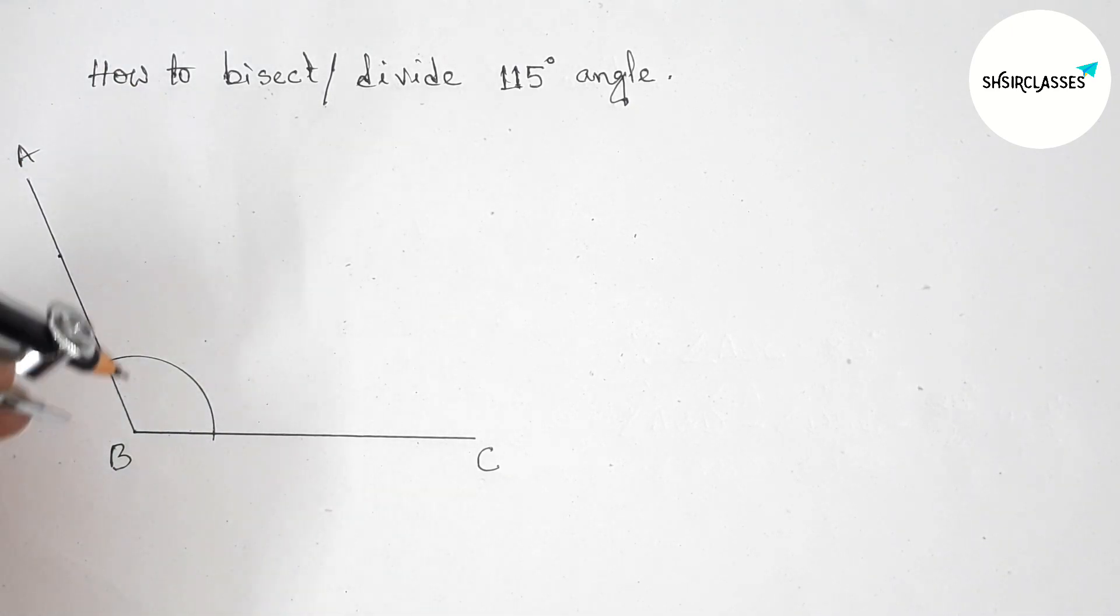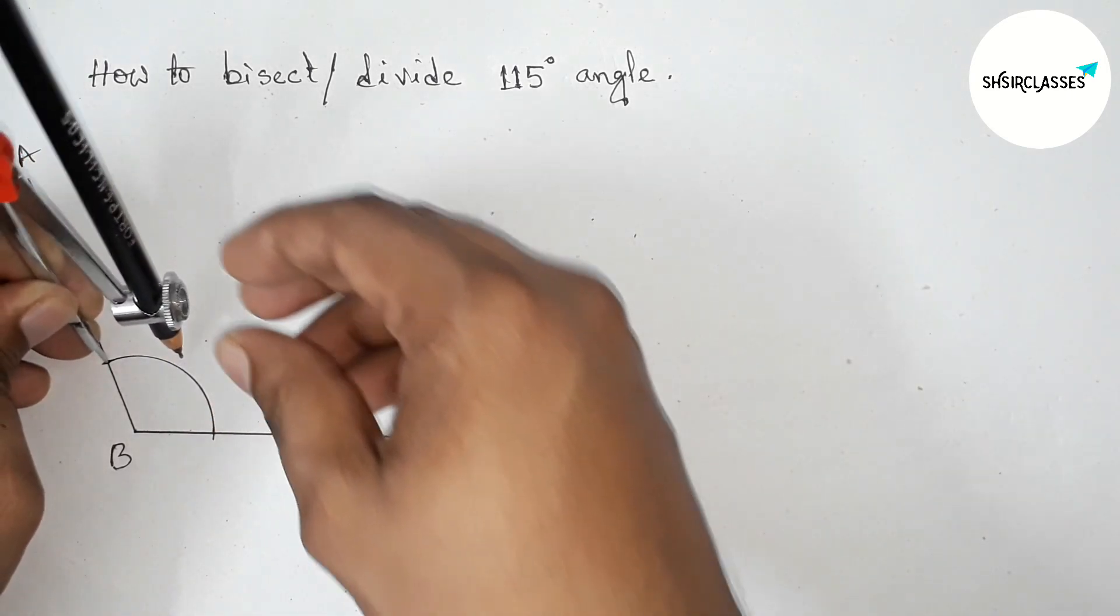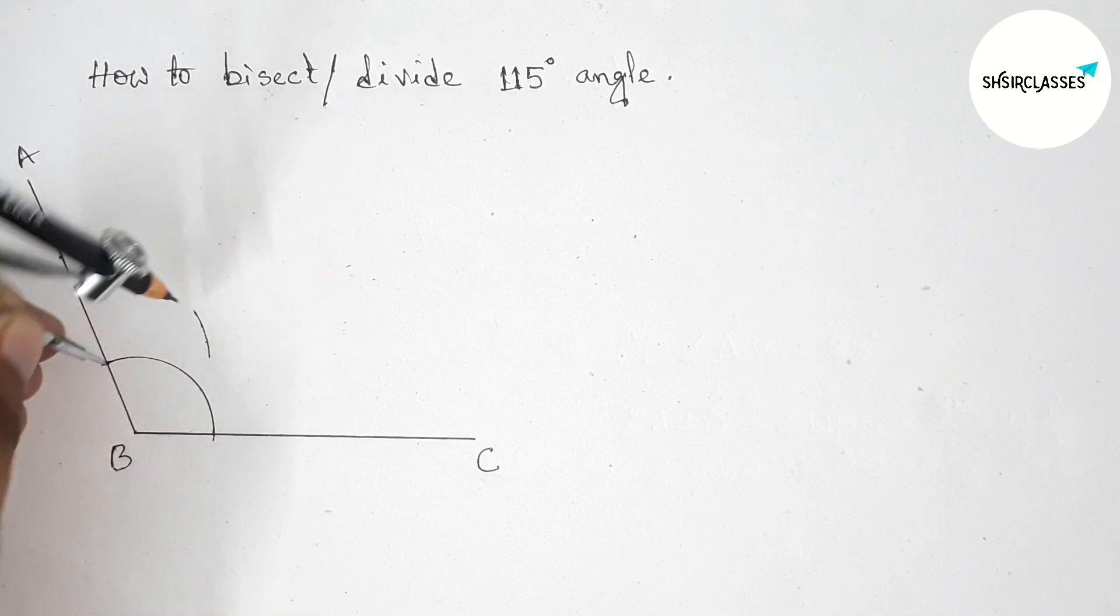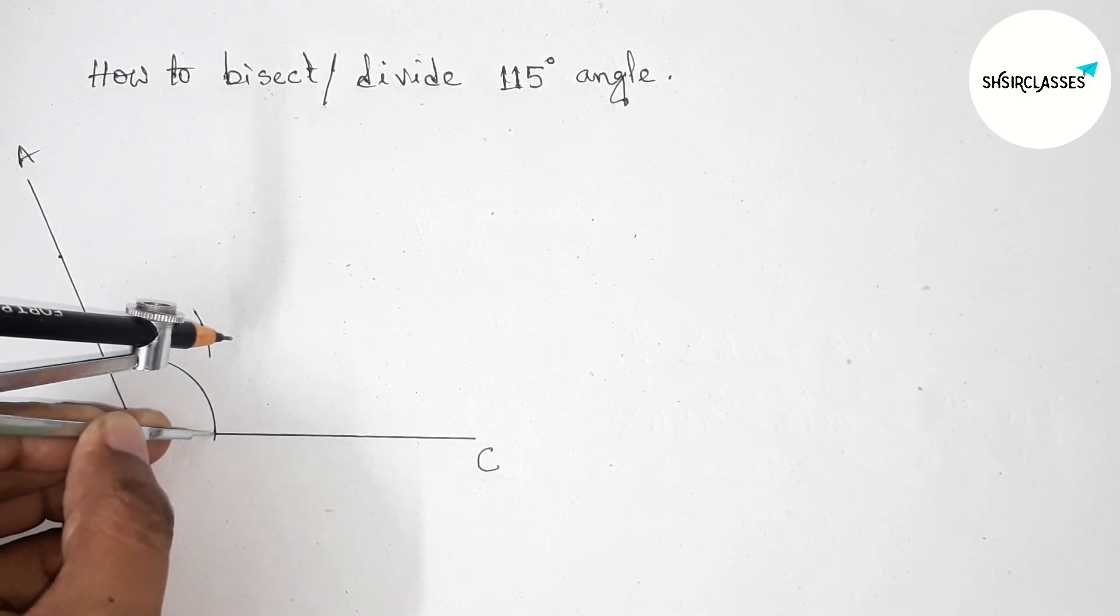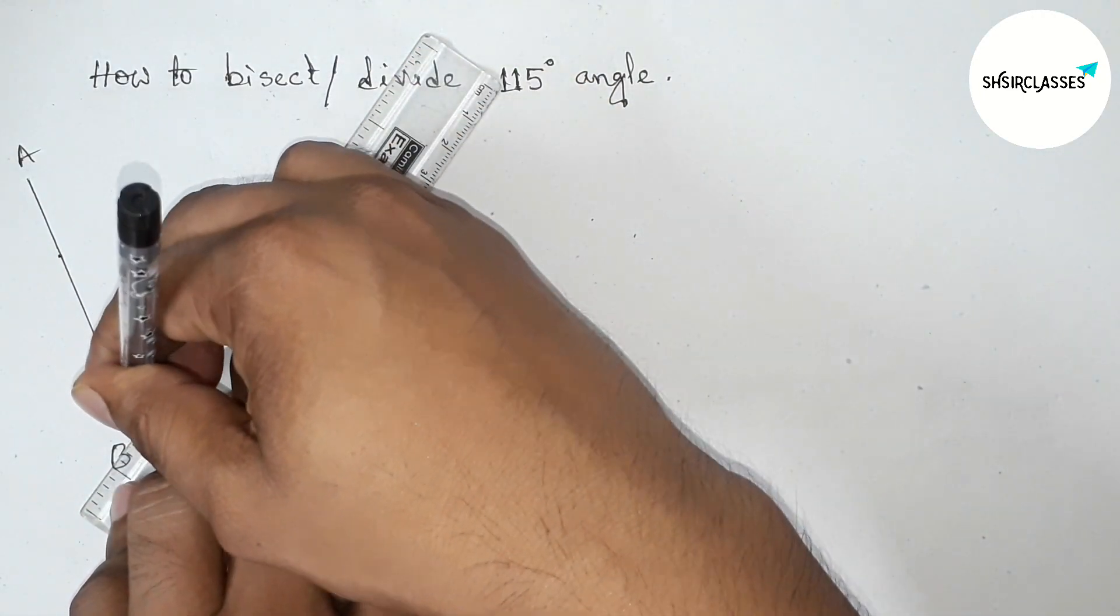Next, putting the compass here and here we have to take greater than half of this and drawing arc here. And putting the compass here and cut here. Now joining this line which bisects the angle.